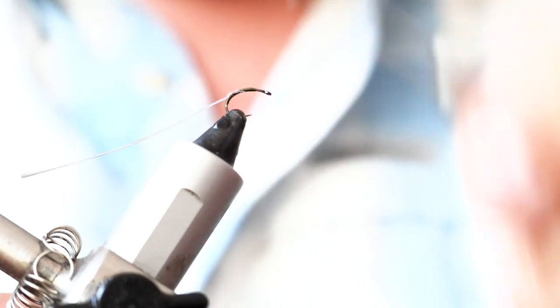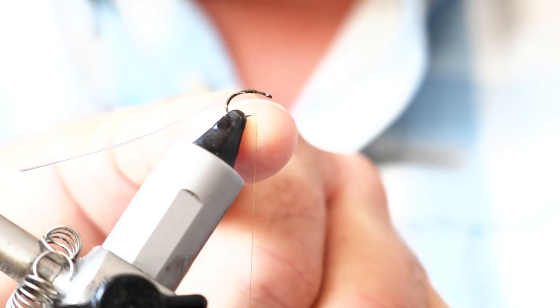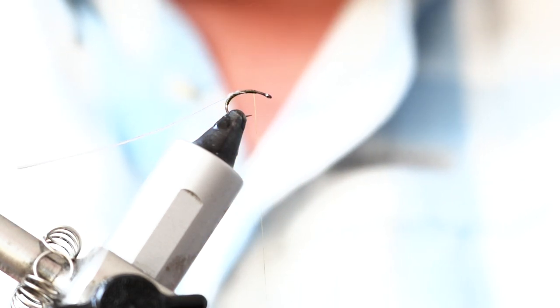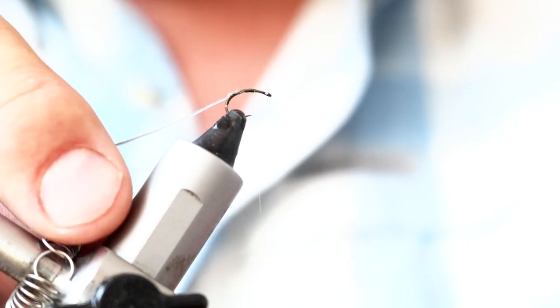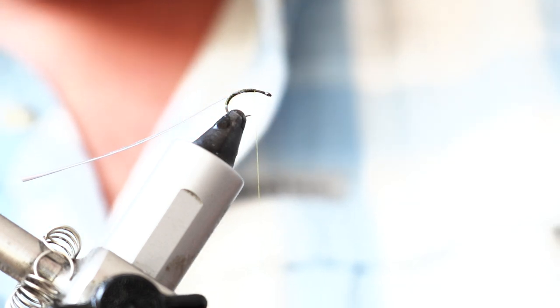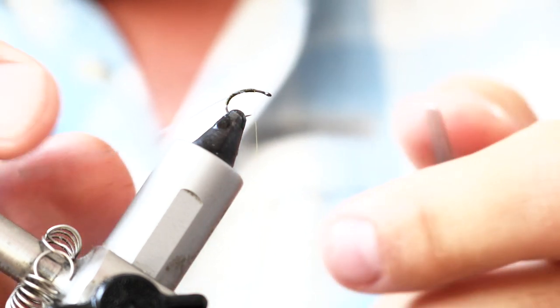And then just wind down and leave yourself probably, as much as you can get away with, probably four or five mil at the head of the fly there. And because that's where your CDC is going to go in, and you need enough room to be able to work with it. There are only a couple of materials, and I'm talking a lot rather than tying, because it's going to be all over fairly quickly.